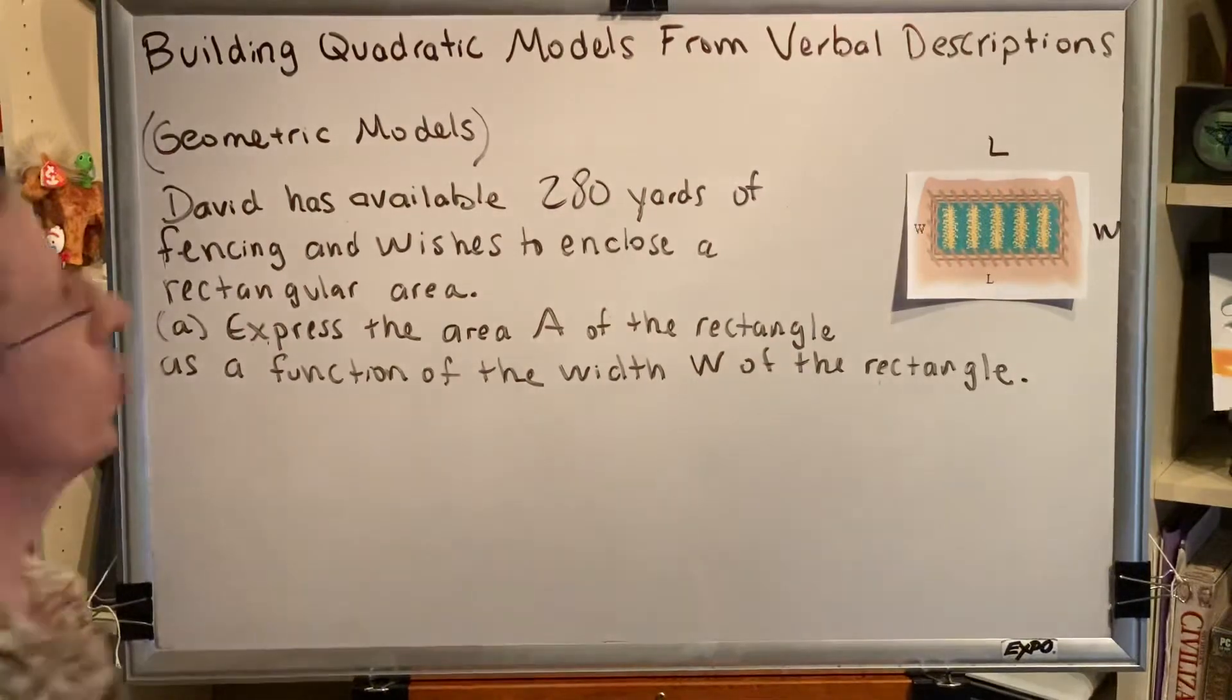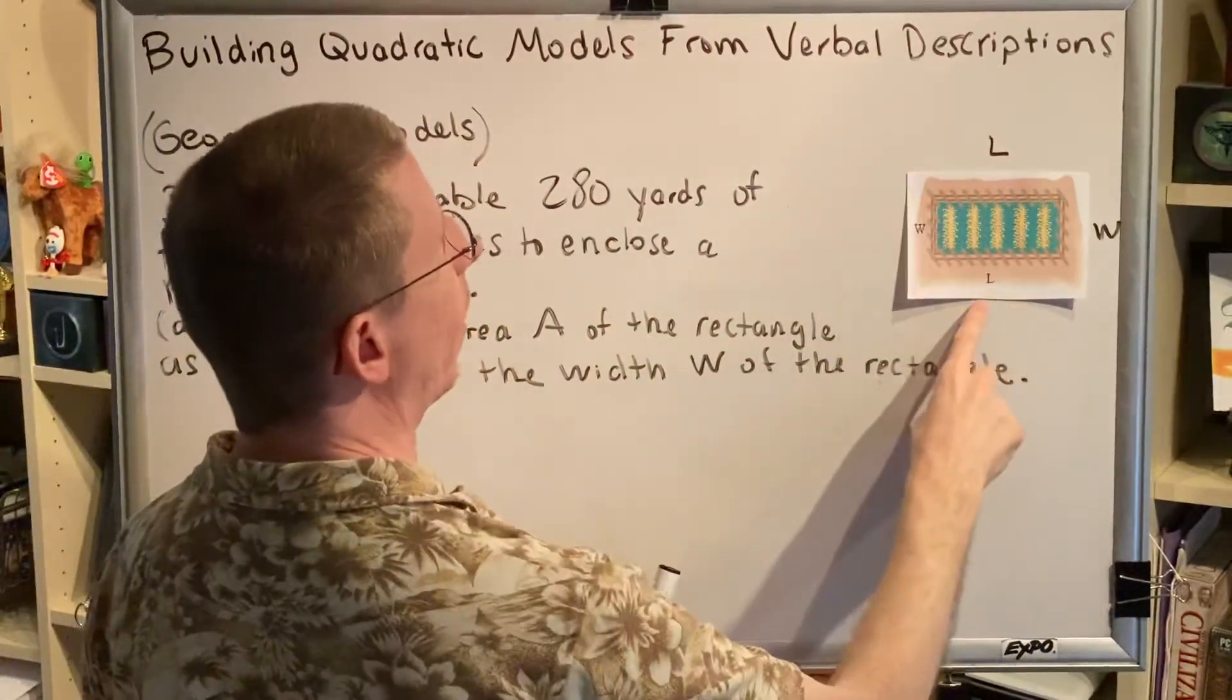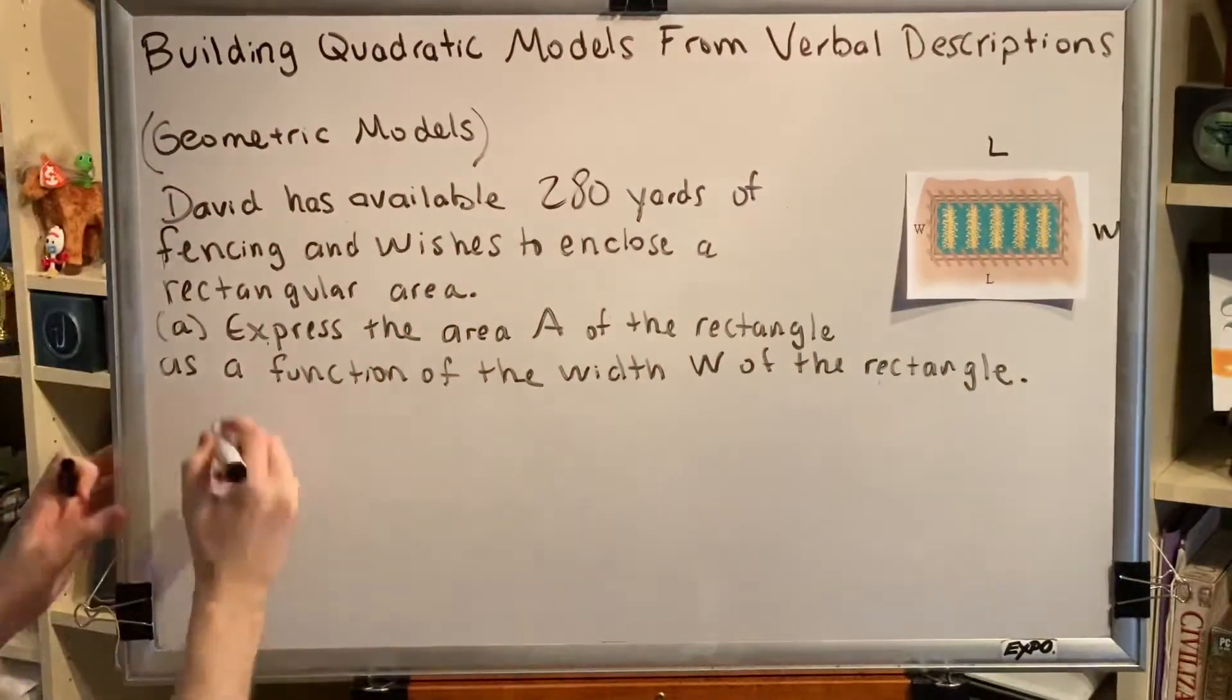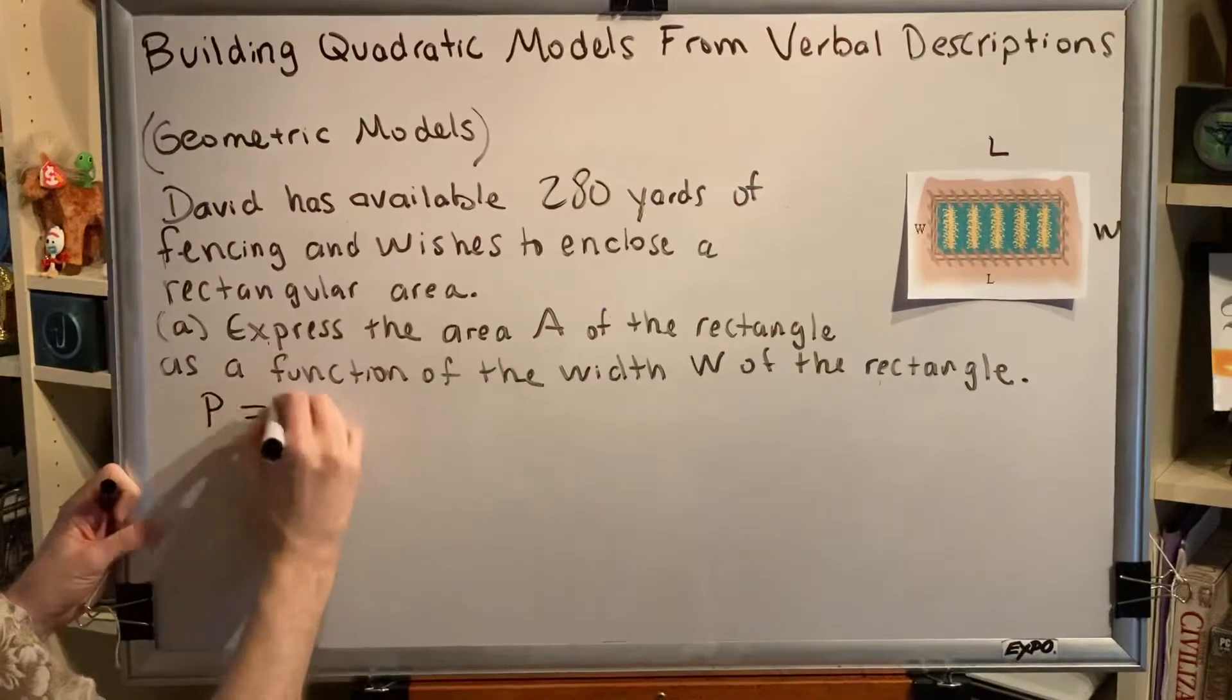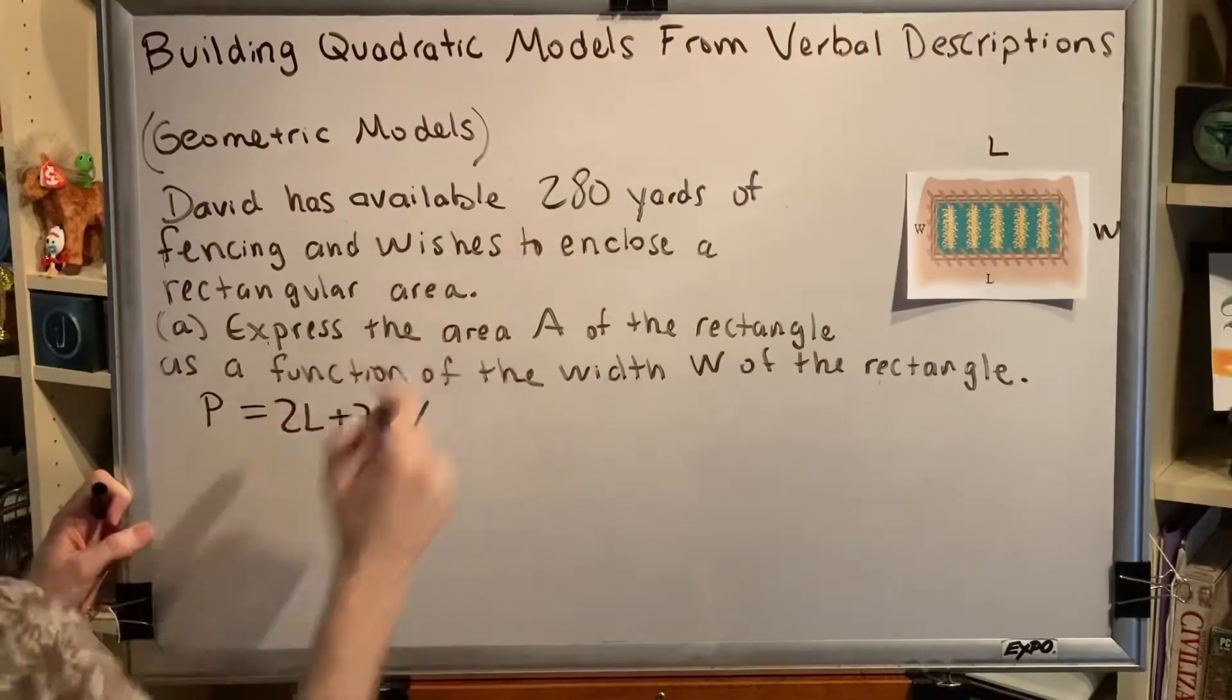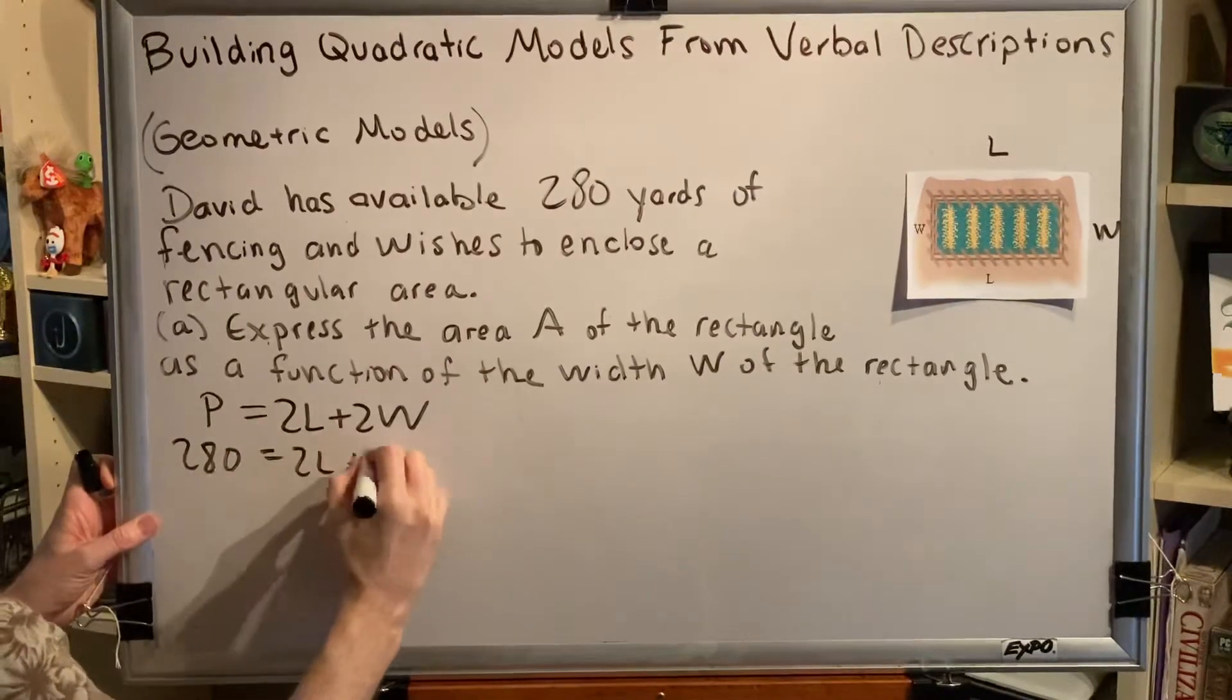So the perimeter, which is what you get when you add up all of these things, would be L plus L plus W plus W. There are two L's and two W's. So using the formula P equals 2L plus 2W, we can replace the P with 280, and we get the statement 280 equals 2L plus 2W.